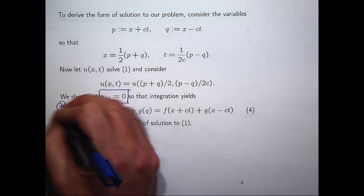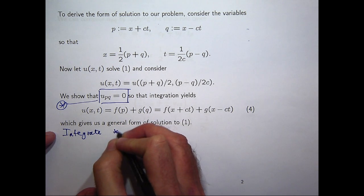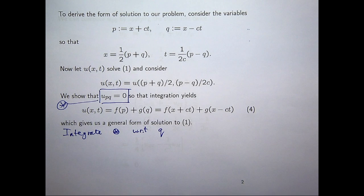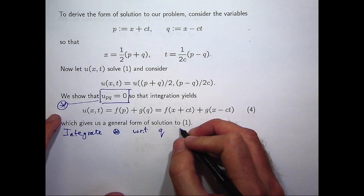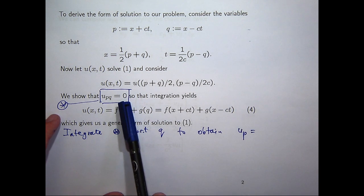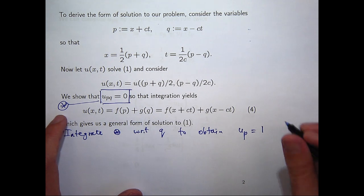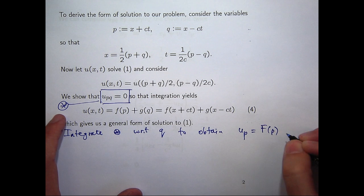Let's just integrate both sides of star with respect to q. On the left hand side, I'm going to get u sub p. And on the right hand side, I don't get a constant of integration. I get a function of p. So, integrate the left hand side to get u sub p. On the right hand side, I'm not going to get a constant. It might be a constant, but essentially I'll get a function of p.